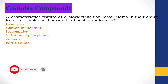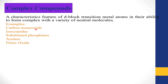In these complex compounds, transition metal atoms have a central role — they are in the center. The examples of neutral molecules that can form complex compounds with d-block transition metal atoms are carbon monoxide, isocyanides, substituted phosphines, arsines, and nitric oxide.